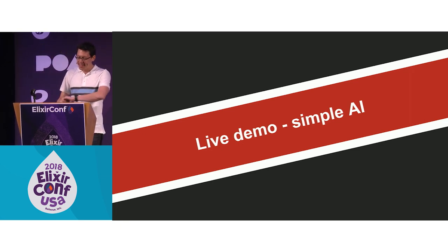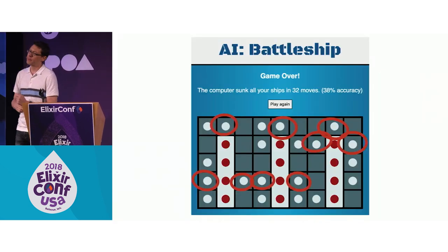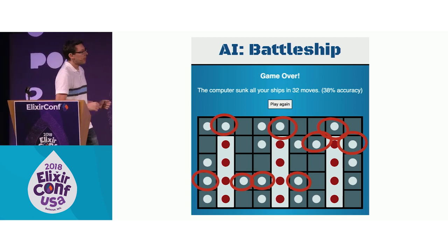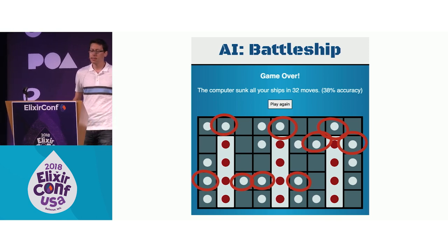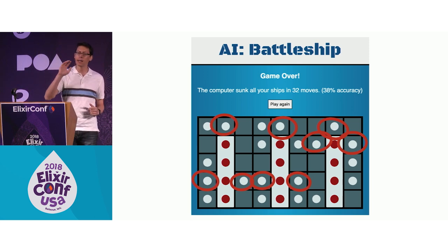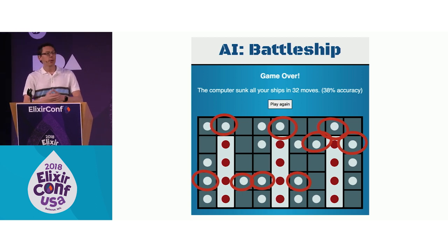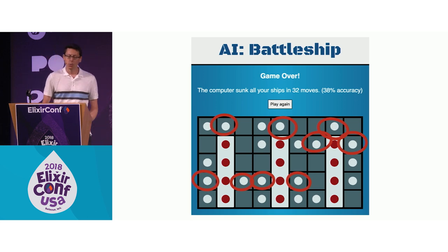Our play testers noticed a couple of issues. The first: because it always goes right, left, up, down, they realized they could game the system by putting ships in a certain way — it's always going to have a maximum of three extra hits as it tries to narrow down. We don't want people to be able to predict the tree, so we have to account for that.